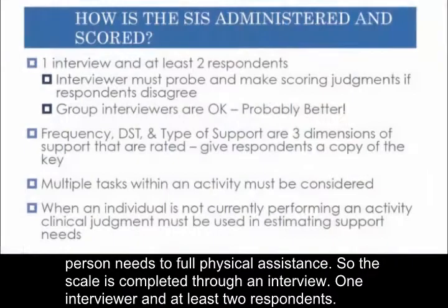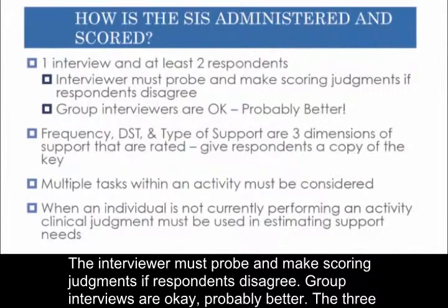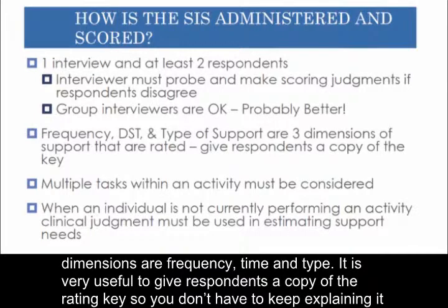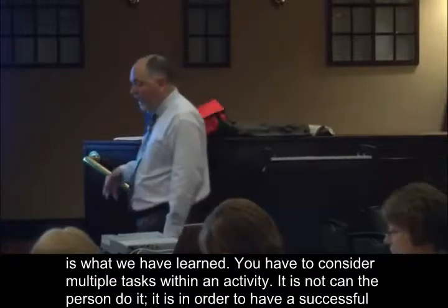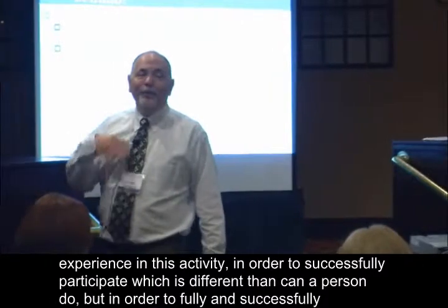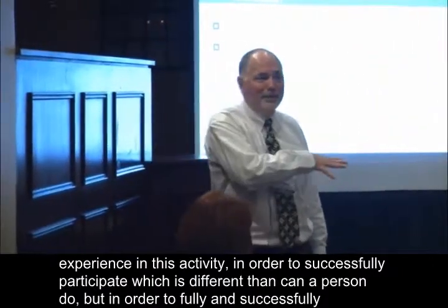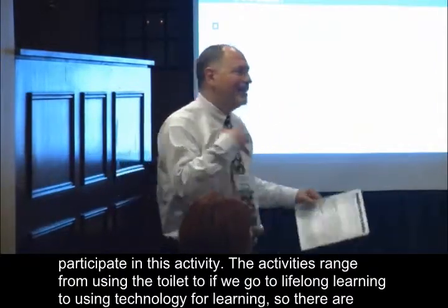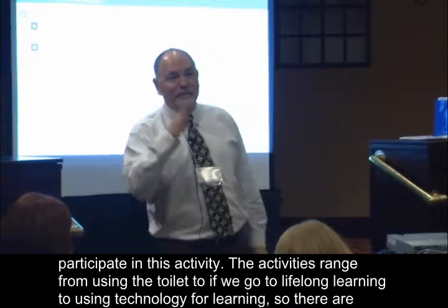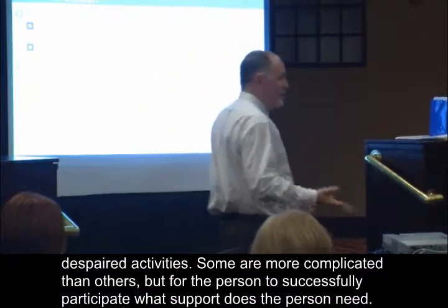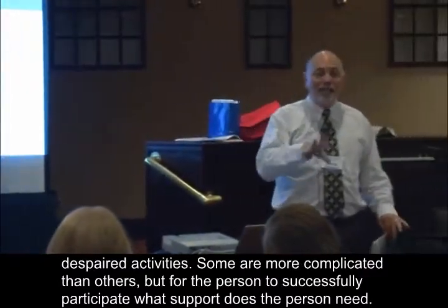The scale is completed through an interview — one interviewer with at least two respondents. The interviewer must probe and make scoring judgments if respondents disagree. Group interviews are okay, probably better. The three dimensions are frequency, time, and type. It's very useful to give respondents a copy of the rating key so you don't have to keep explaining it. You have to consider multiple tasks within an activity, and the question is not 'can the person do it?' — it is 'in order to fully and successfully participate in this activity, what support does the person need?'